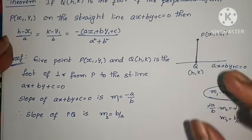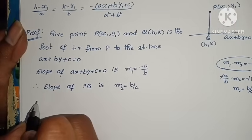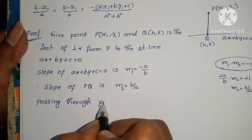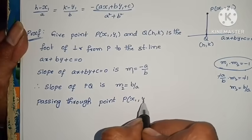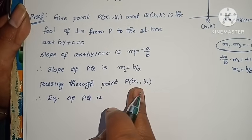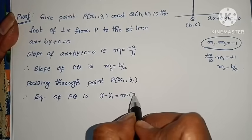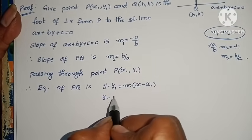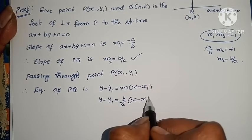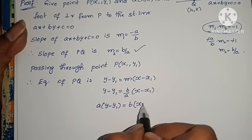Slope of PQ is b by a, and it passes through point P(x₁, y₁). Equation of PQ: using point-slope form, y minus y₁ equals m into x minus x₁. So the equation becomes: a into (y minus y₁) equals b into (x minus x₁).